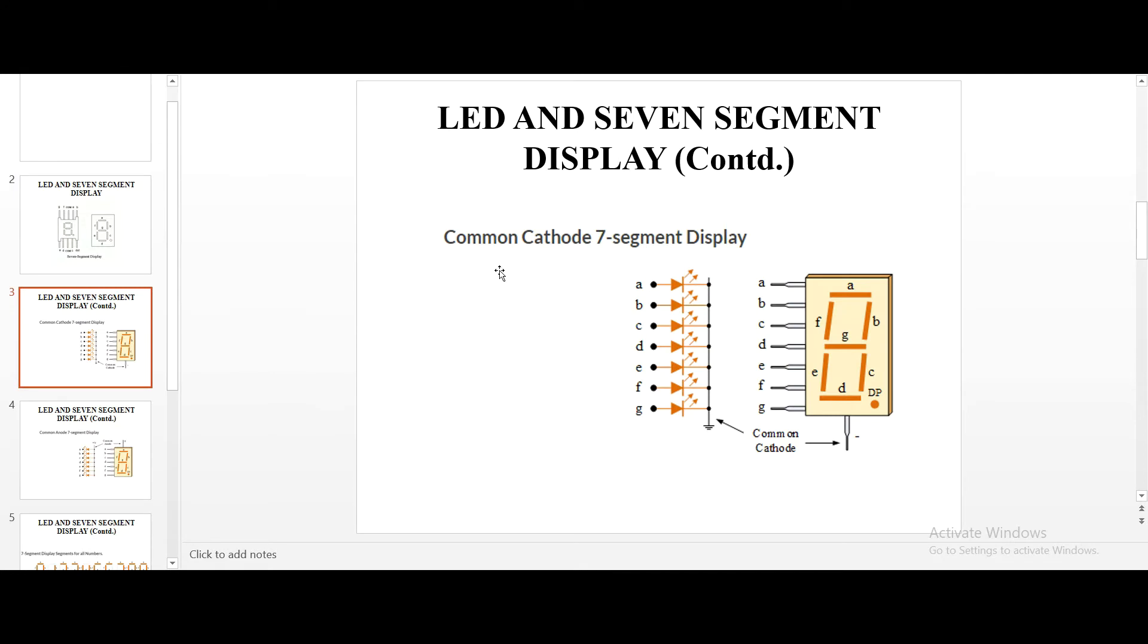So, this is a common cathode 7 segment display. There are 2 types of 7 segment displays: common anode displays and common cathode display. In common cathode displays, the cathode of the LED will be commonly grounded. And anodes will be powered individually.